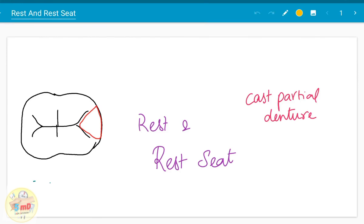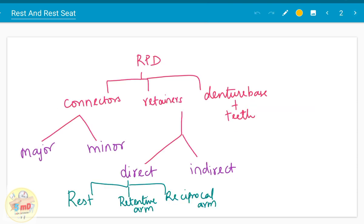In this video, we will see about rest and rest seats which are part of cast partial denture. Removable partial dentures, as we know, consist of the following parts: connectors, retainers, denture base along with the artificial teeth.